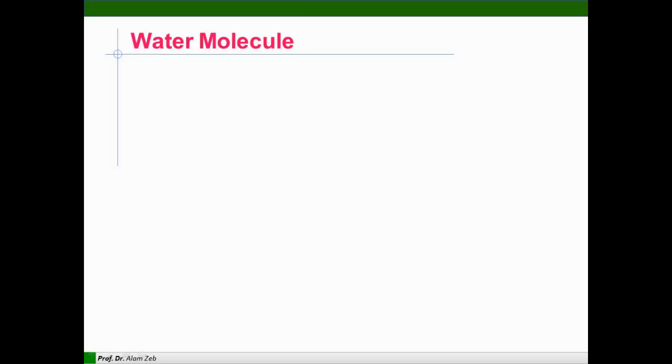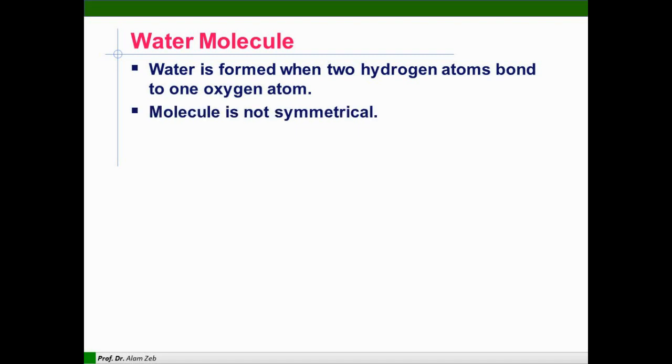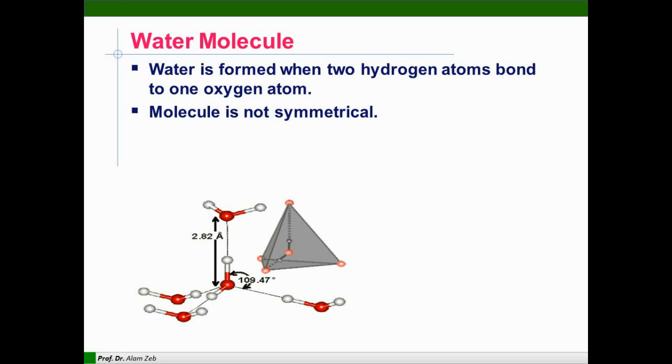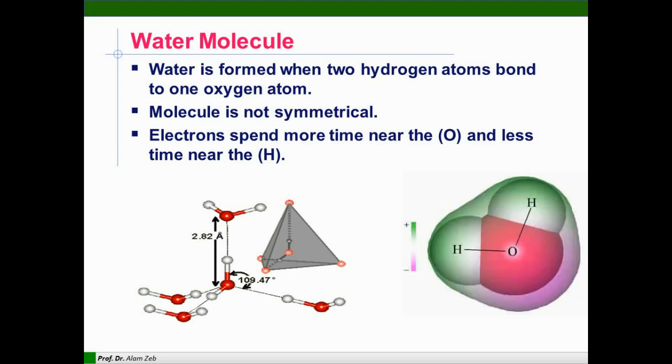What is a water molecule? Water is basically formed when two hydrogen atoms bond to one oxygen atom. The molecule of water is not symmetrical, it is rather tetrahedral in nature. Electrons spend more time near the oxygen and less time near the hydrogen.